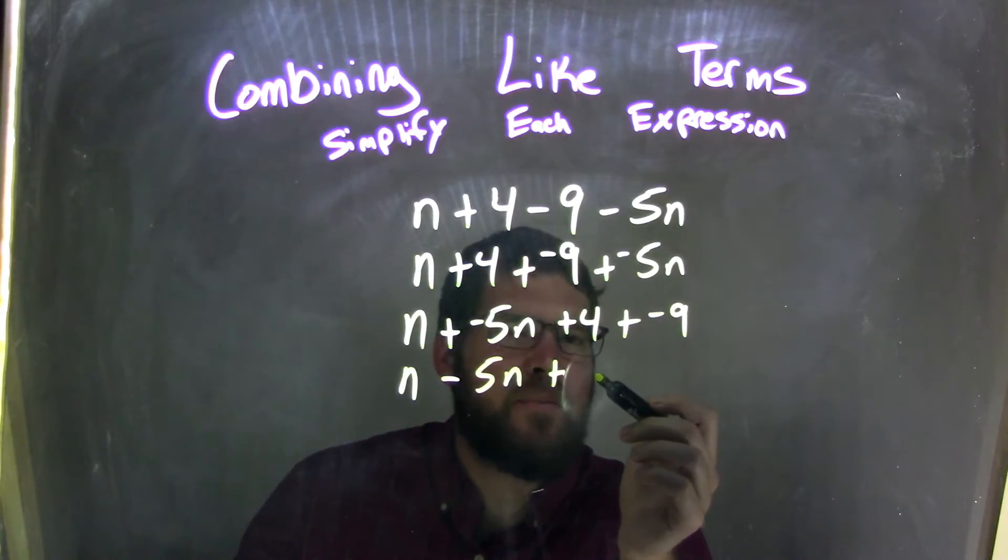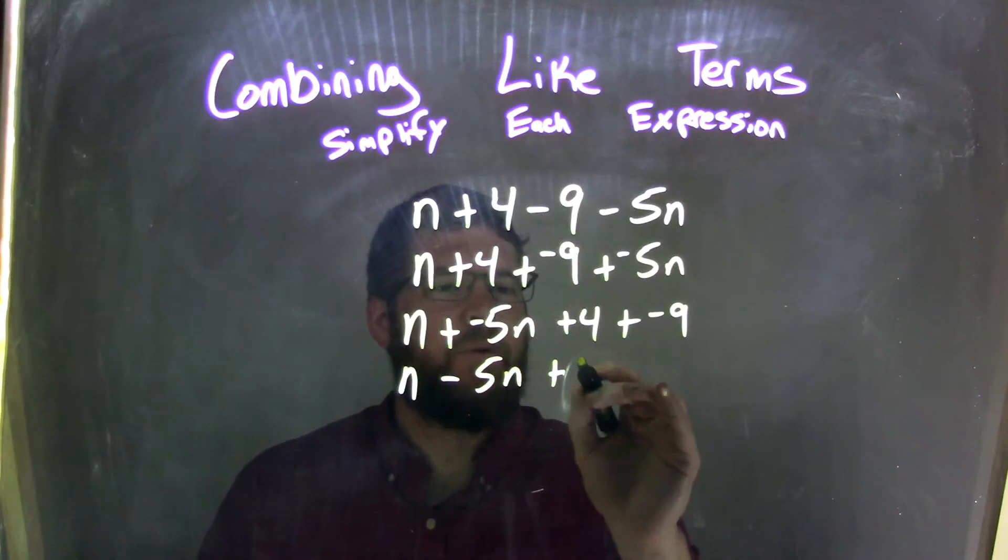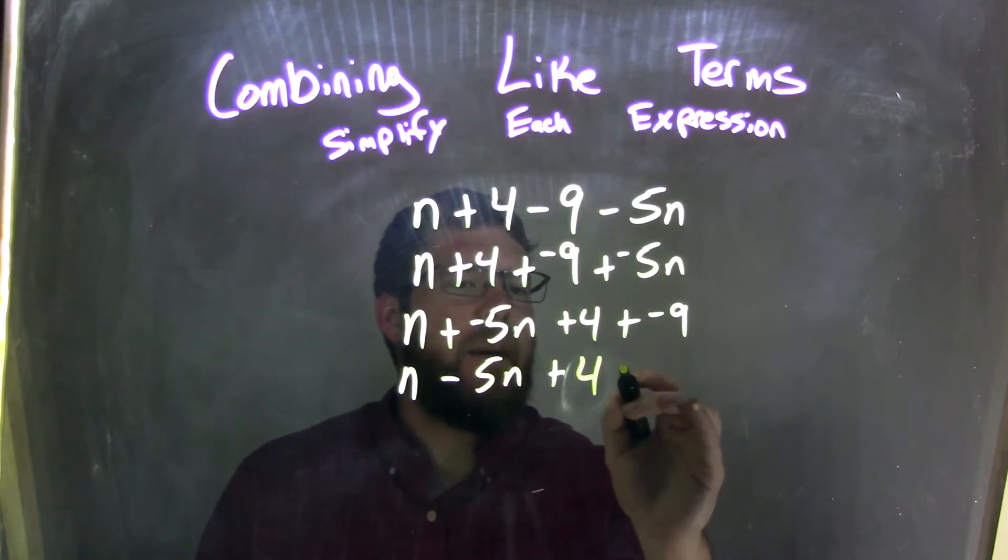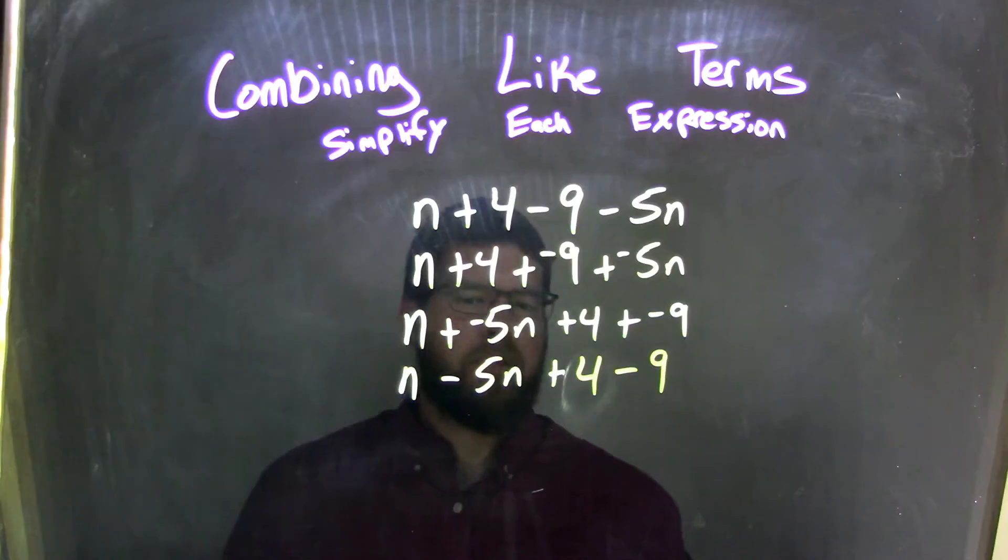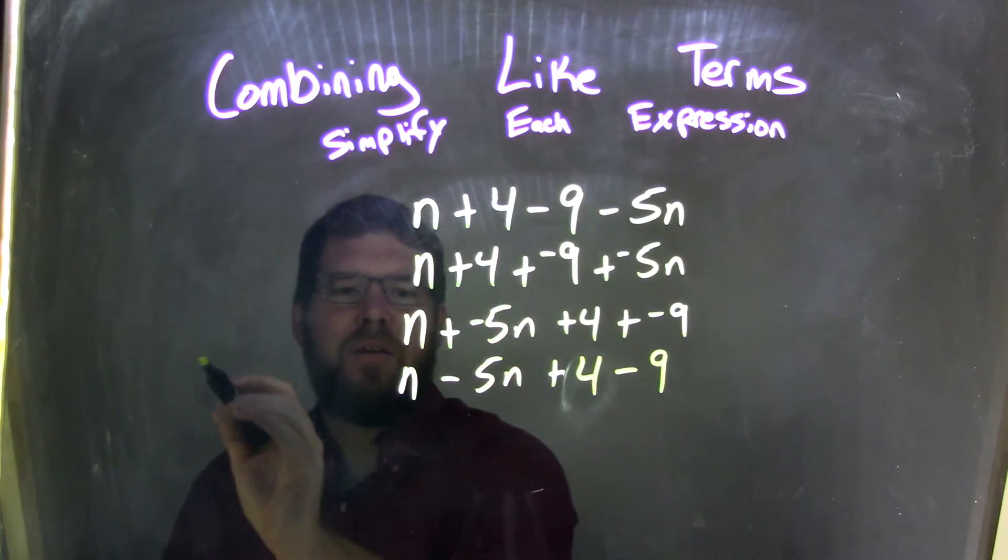Well, instead of just writing the plus 4, I know it's 4 plus the negative 9. What if I rewrote that instead of adding a negative just to be subtraction? So I'm going to keep the 4, I just don't want to get ahead of myself. Minus 9 in that case. Well, what's n minus 5n? That's tricky. And then 4 minus 9. So let's look at a little number line here.